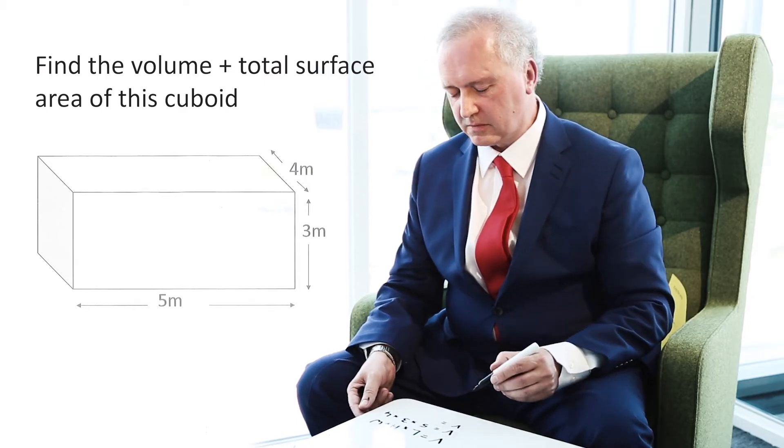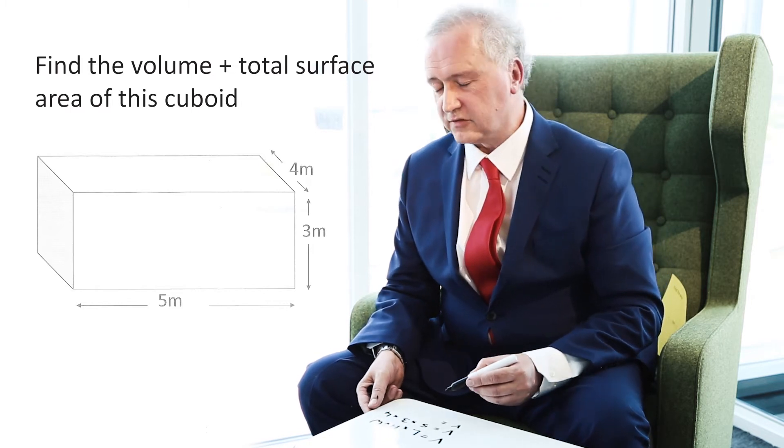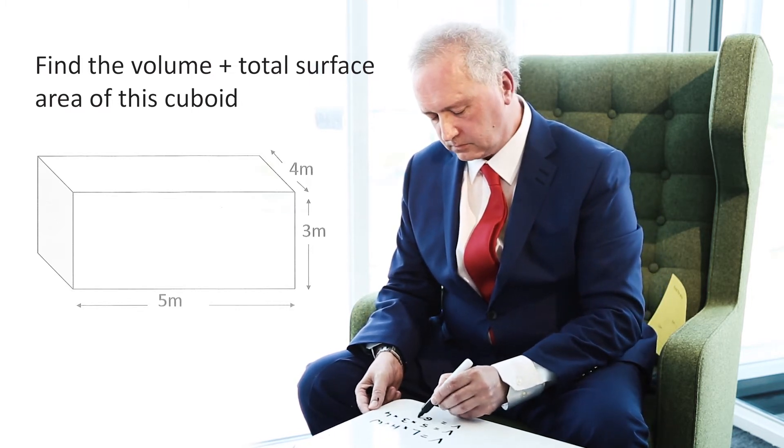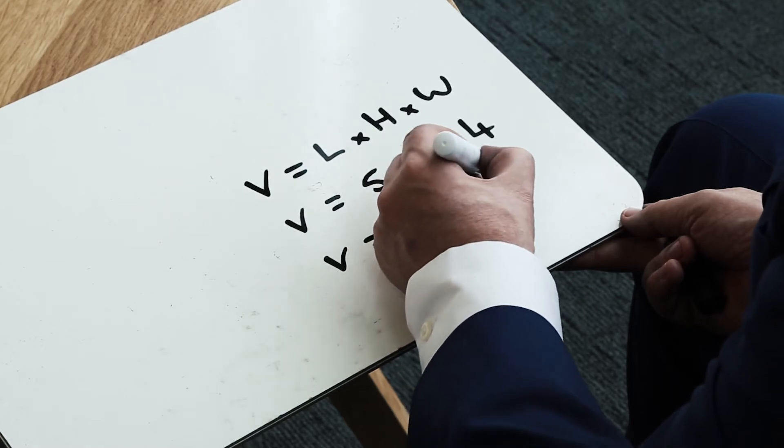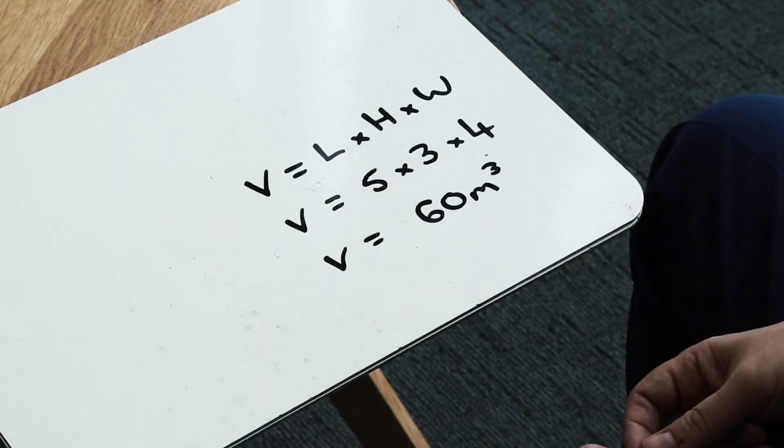Because I know that 5 times 3 is 15 and 15 times 4 is equal to 60, I can see that my total volume is 60 metres cubed. So the total volume of my cuboid is 60 cubic metres.